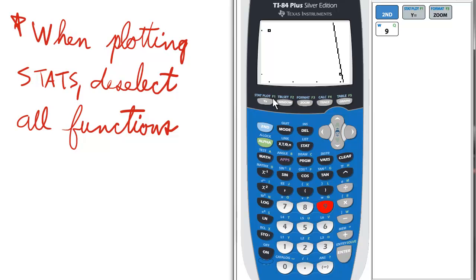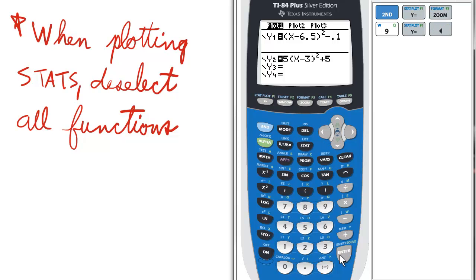I probably have some functions selected. So I want to go to my y equals and make sure all my functions are deselected.